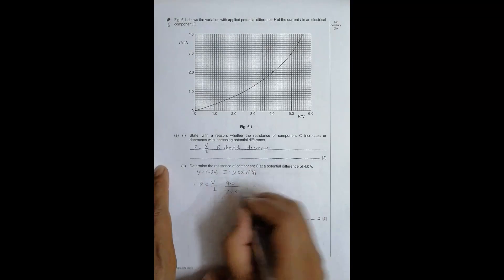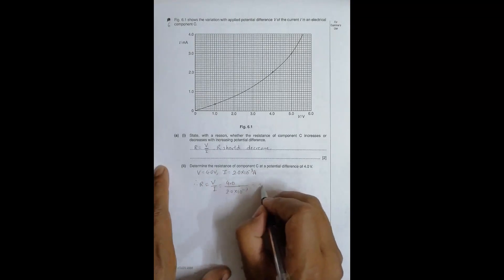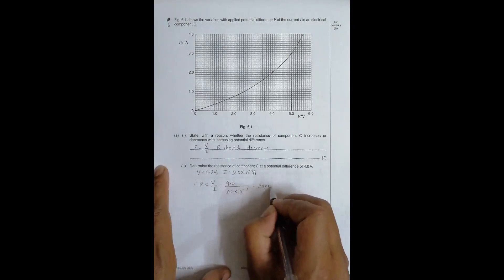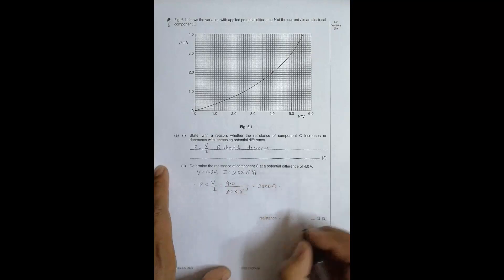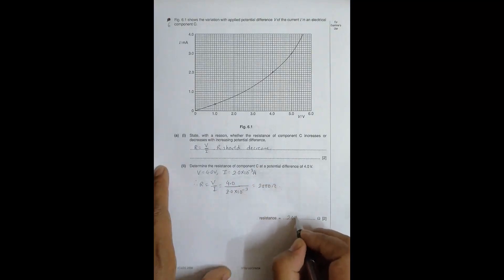That gives us 2 × 10³, so it will be 2000 ohms. The resistance of this component is 2000 Ω at that point.